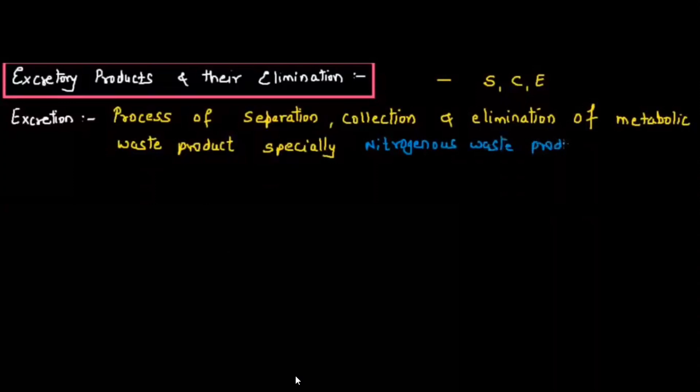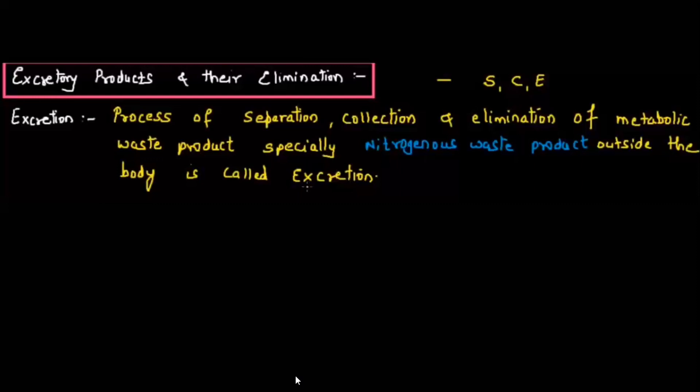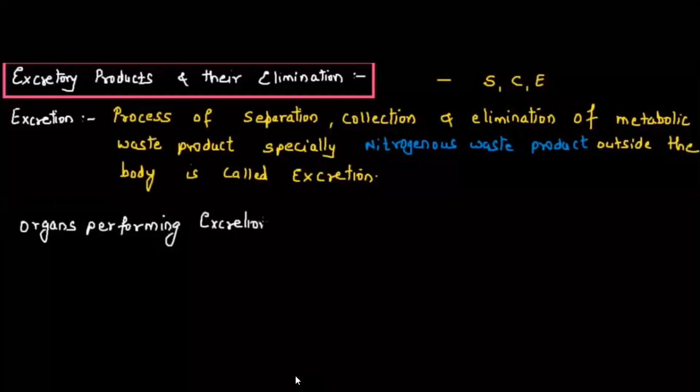Nitrogenous waste is eliminated outside the body — that is called excretion. Like we clean our house every day, our body also needs to be cleaned. Waste is generated in the house; in the same way nitrogenous waste is generated in the body. All this nitrogenous waste first has to be separated, then collected, and then eliminated out of the body. This is what excretion is. Let's look at the organs performing excretion.